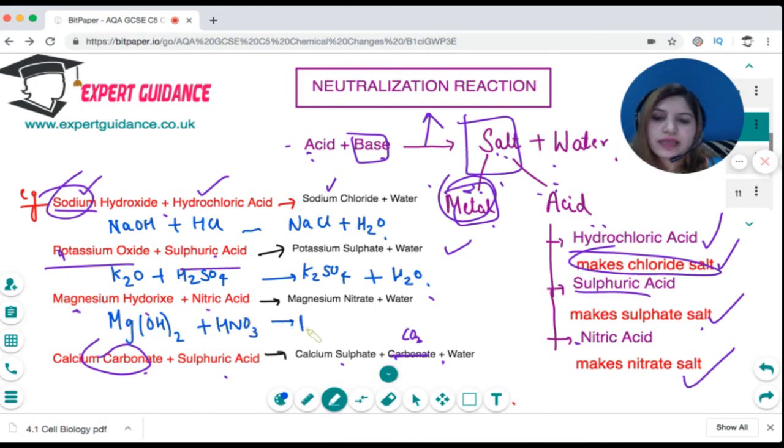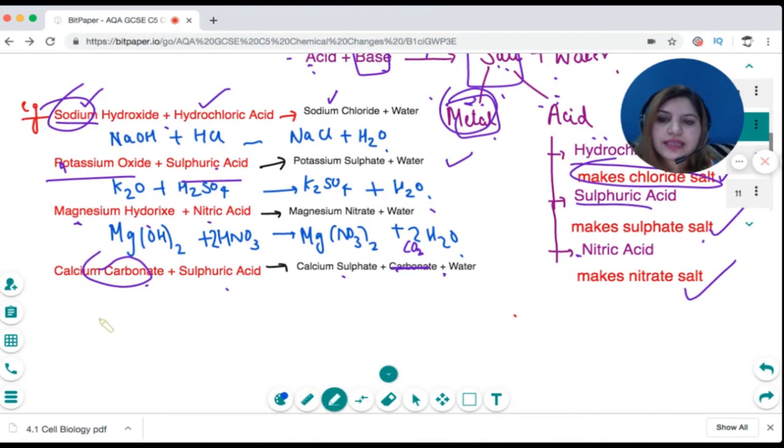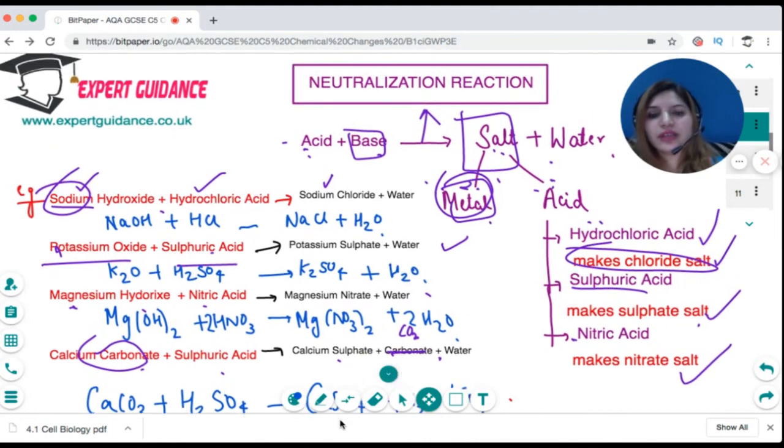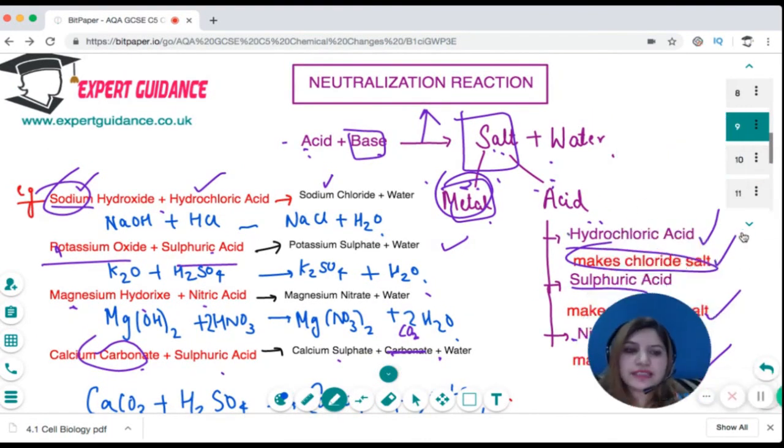Magnesium hydroxide formula is Mg(OH)2 plus nitric acid HNO3 forms magnesium nitrate Mg(NO3)2. Why? Because nitrate has a charge of -1, magnesium has +2, so when we crisscross we get Mg(NO3)2 plus 2 water molecules. Calcium carbonate CaCO3 plus sulfuric acid H2SO4 react to form calcium sulfate plus water plus CO2. You should know how to write balanced chemical equations and name salts.